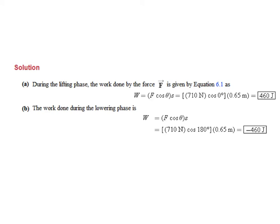So when our weightlifter was lifting the weight up, they applied a force of 710 newtons, a distance of 0.65 meters, and the angle between the force and the displacement was 0. And we love it when the angle is 0, because the cosine of 0 is just 1. So 710 times 0.65 tells us that the weightlifter did 460 joules of work on the barbells.